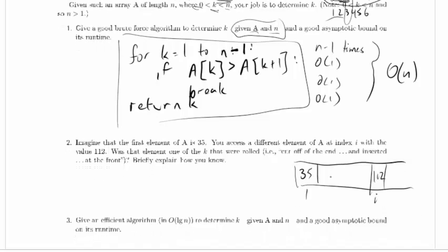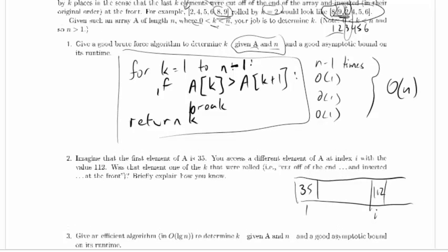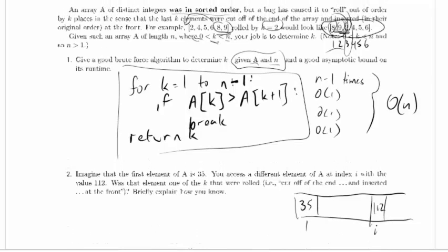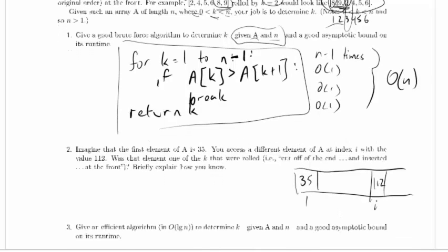Now, before we went down, we went up and up and up. And then we went down, and we're never going to get as high again because the things that were cut off the end were the very biggest things. So 35 is larger than everything that didn't get cut off of the end.